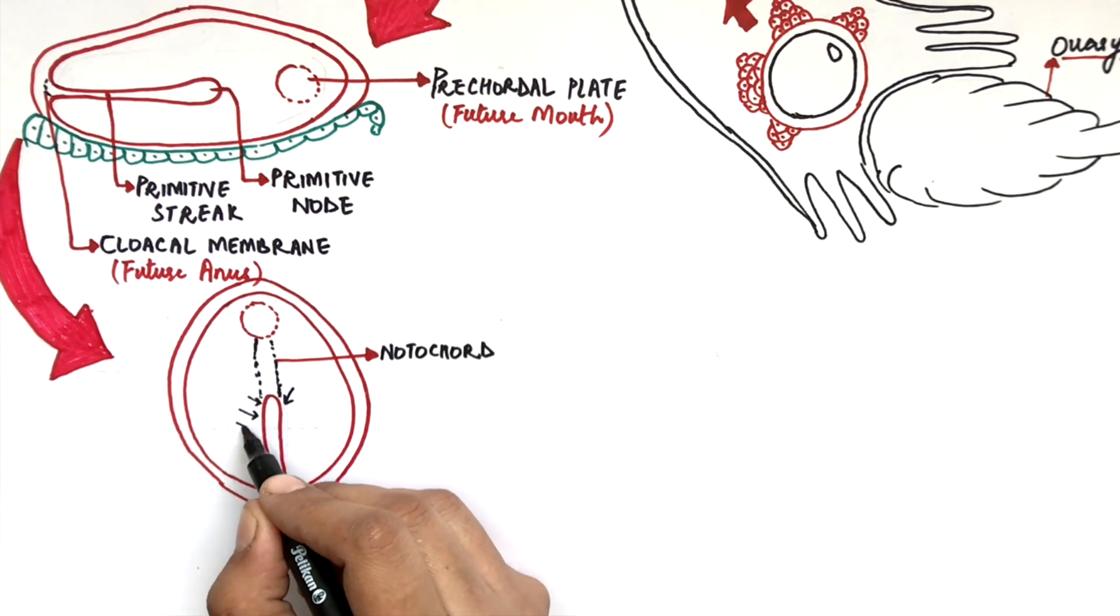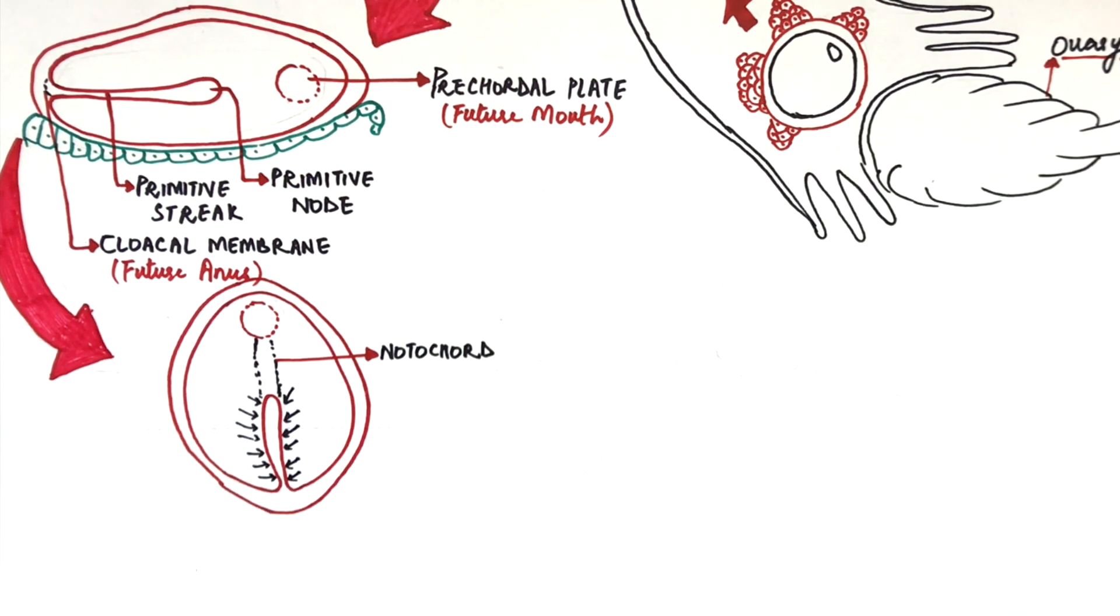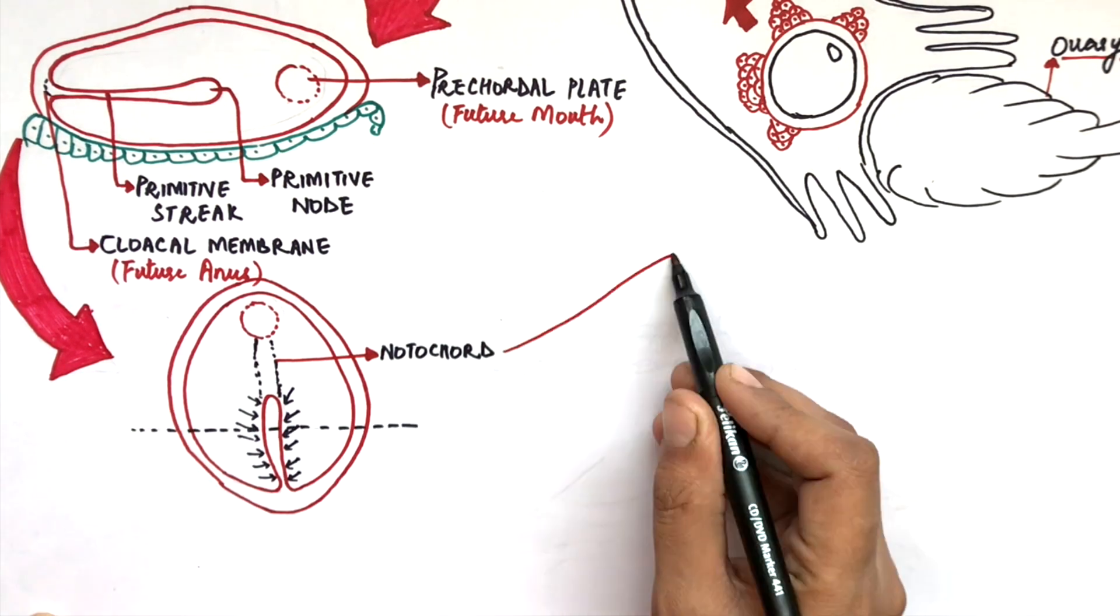As the third week arises, the cells of the epiblast will proliferate and invaginate the primitive node and the primitive streak, and will give rise to a third layer of cells which on a cross-section will look something like this.